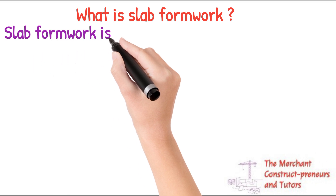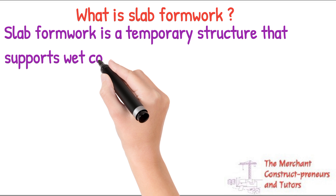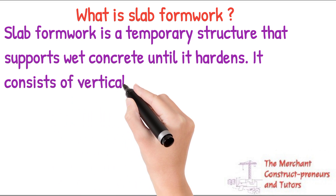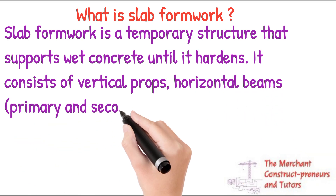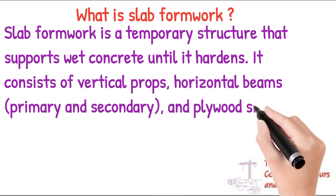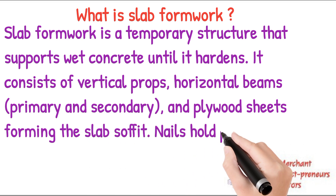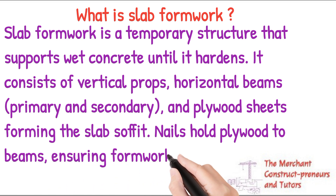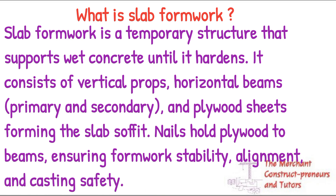The first thing we are going to look at is what slab formwork is. Slab formwork is a temporary structure that supports wet concrete until it hardens. Once the concrete hardens after 21 to 28 days, the formwork is removed and the slab remains. It consists of vertical props, horizontal beams — primary and secondary — plywood sheets forming the slab soffit, and nails that hold the plywood to the beams, ensuring formwork stability, alignment and casting.